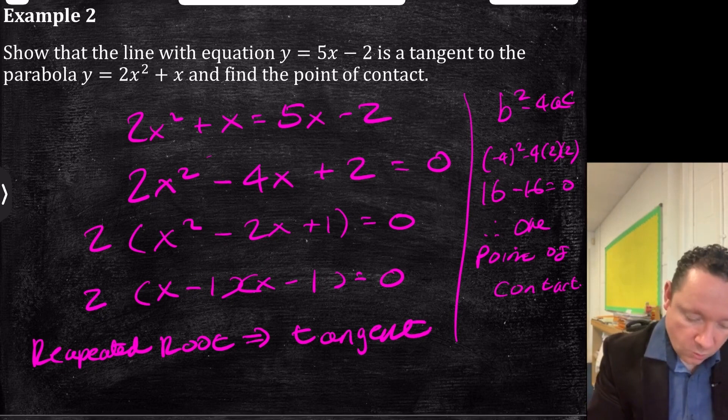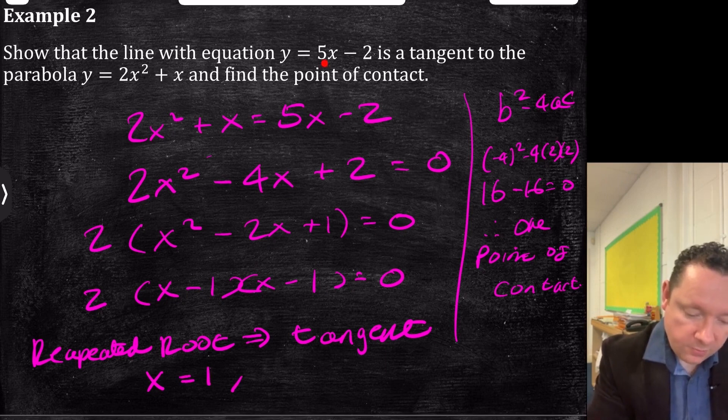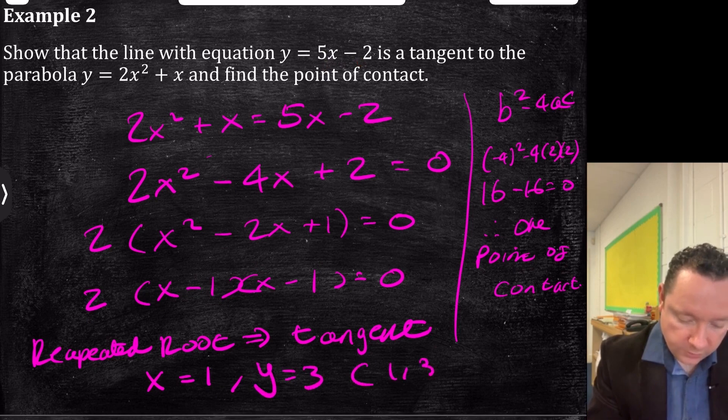x - 1 = 0, so x = 1. Then, subbing that in to here, 5(1) - 2 = 3. y = 3. So, the point is (1, 3). And we're done there.